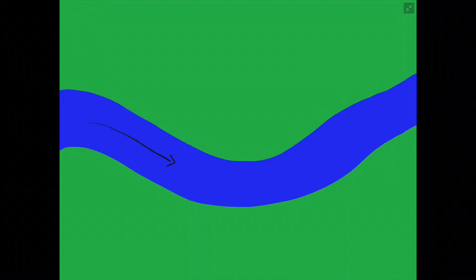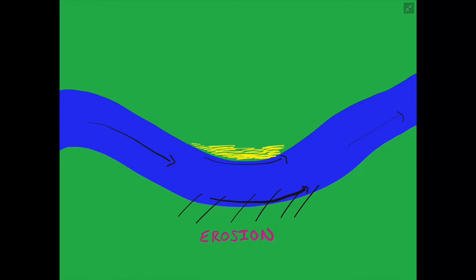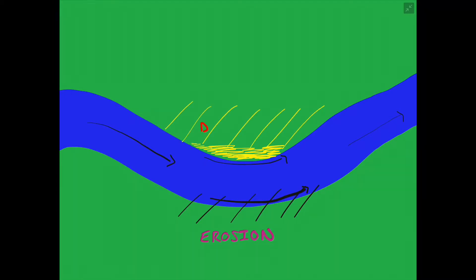Over time this process of erosion on the outside bend and deposition on the inside bend causes the meander to grow and move. As you can see, the changing shape of the meander from the previous diagram has slightly changed because erosion is forcing the meander to move further out whereas deposition is building up the inside bank of the meander.